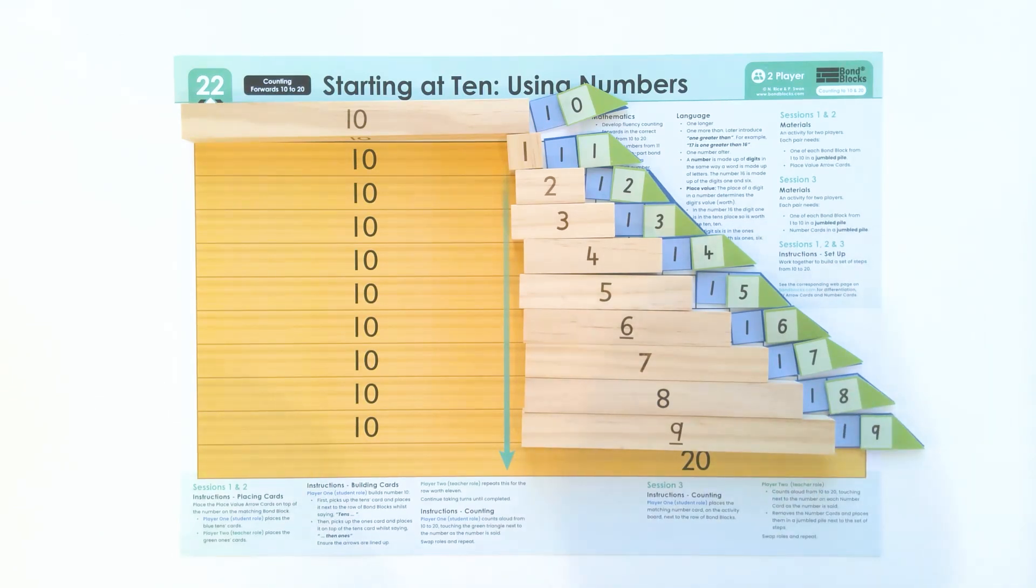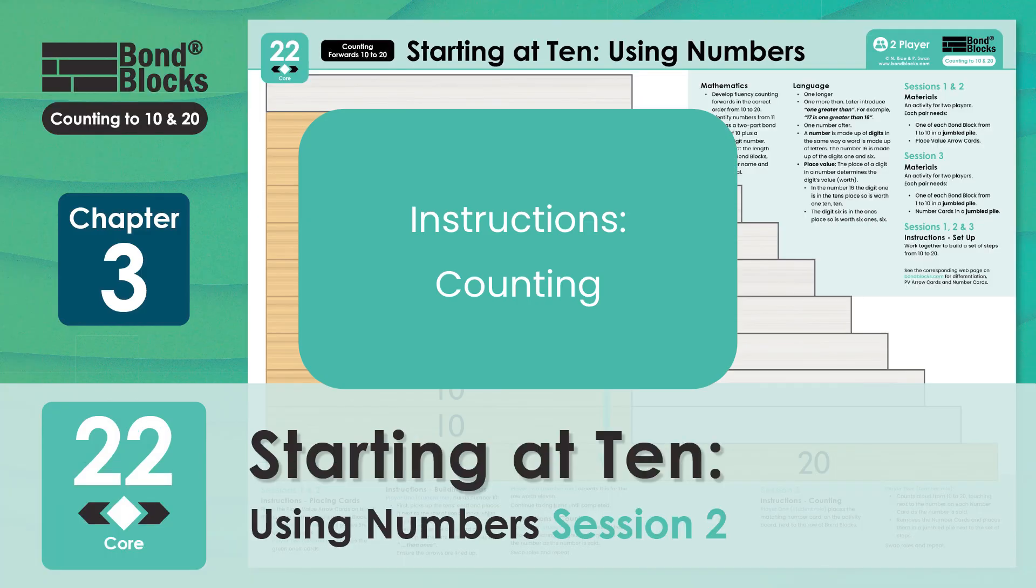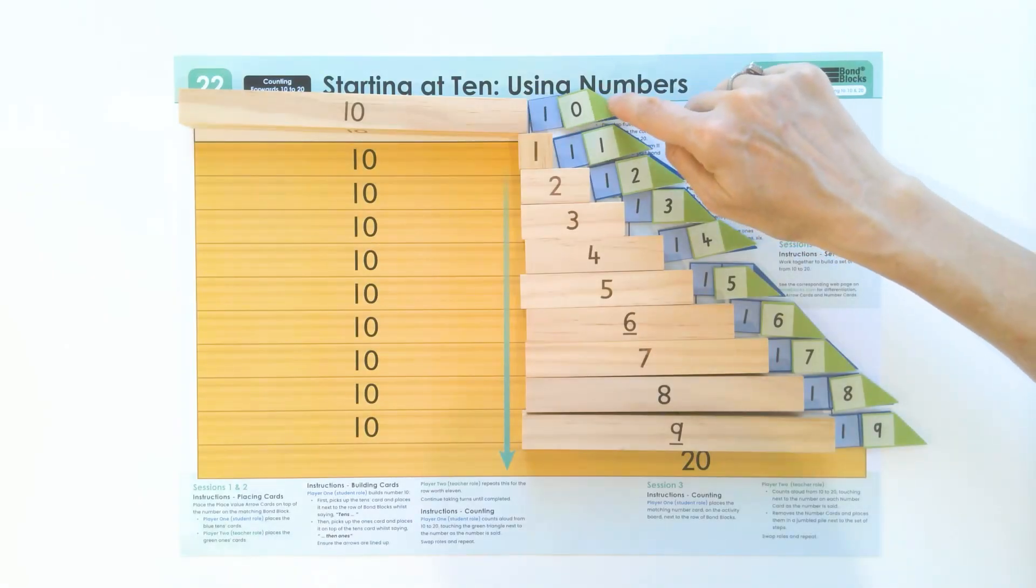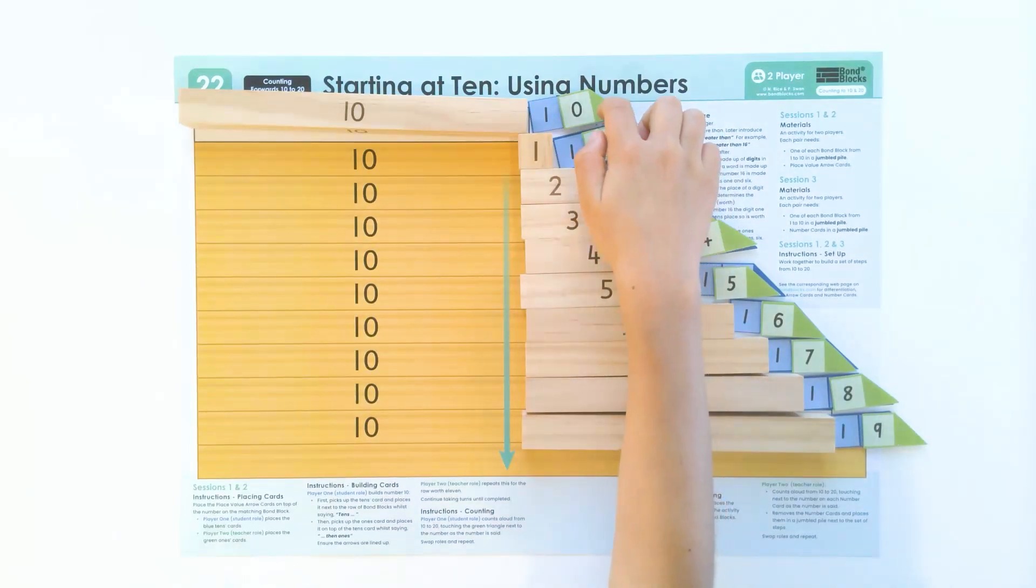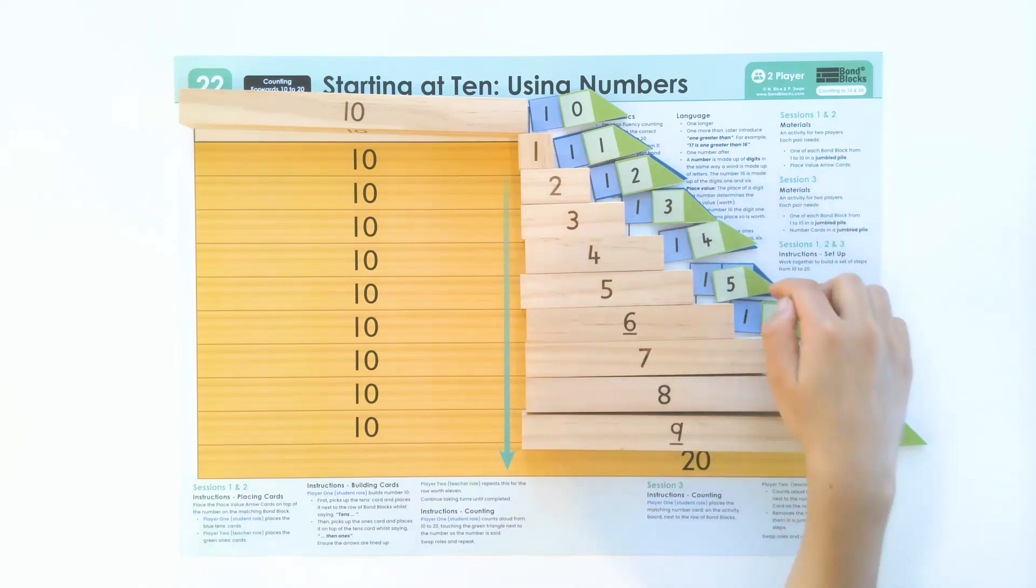Now it's your turn. Can you count, pointing to the arrows again? Ten, eleven, twelve, thirteen, fourteen, fifteen, sixteen, seventeen, eighteen, nineteen, twenty. Well done, Louisa. I heard that mmm sound on the end of your counting. Now it's your turn.